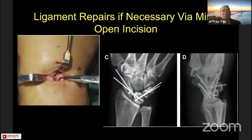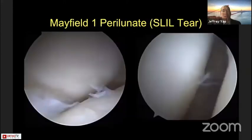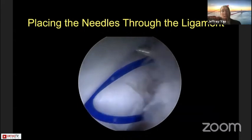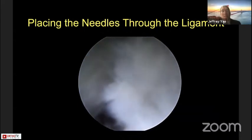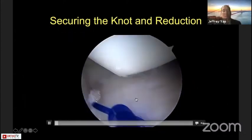Lubeau advocates for ligament repair if necessary via mini-open incision. I adopt this technique and have not fully adopted pinning-only, although those papers show promising results. For earlier stage injuries, I have adopted Christoph Mathoulin's technique of dorsal capsular ligament repair. In a Mayfield Stage 1 scapholunate ligament injury, we place needles with a monofilament suture through the ligament from the radial carpal portal, shuttle them to the mid-carpal portal, and tie them outside the body, then pass the knot back into the joint.